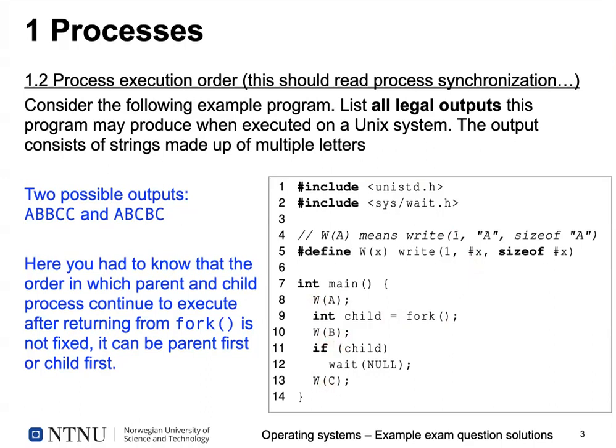In whatever process is the parent, the return value of fork is not equal to zero. So if child is not equal to zero, we wait for any child process and then output 'c'. The question asks: what are all the legal outputs — all valid execution orders that can actually take place? For this you had to know that the order in which parent and child processes continue after returning from fork is not fixed, and you had to know how wait for a process works.